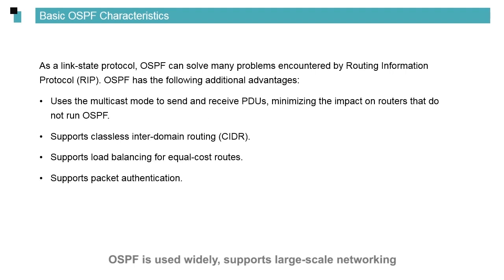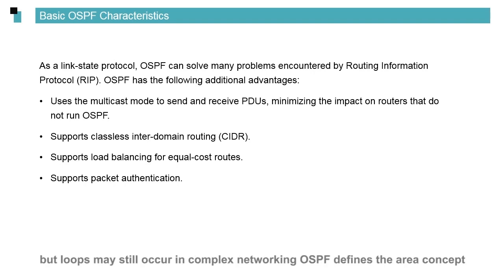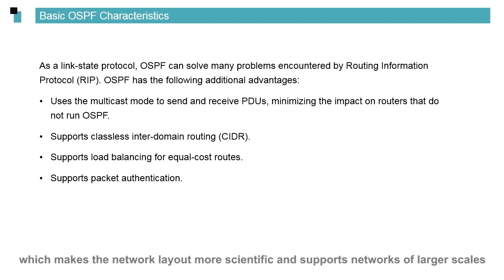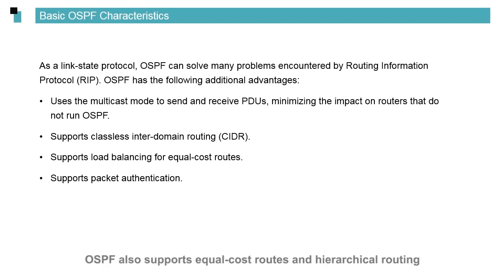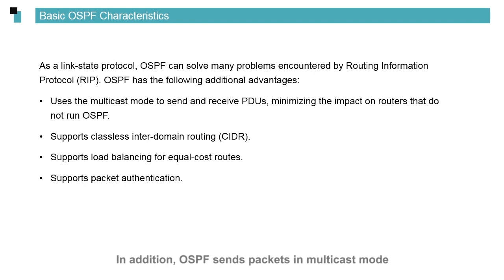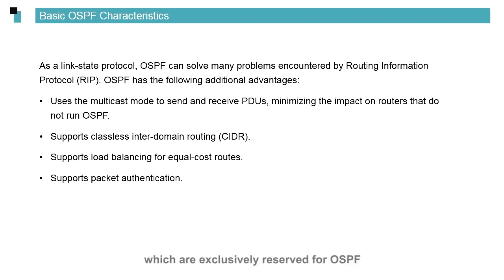OSPF stands for open shortest path first, which means it is public and any vendor can use this protocol — a major reason for its wide application. OSPF is used widely, supports large-scale networking, and converges rapidly. OSPF uses the SPF algorithm to prevent loops, though loops may still occur in complex networking. OSPF defines the area concept, which makes the network layout more scientific and supports networks of larger scales. OSPF also supports equal cost routes and hierarchical routing, and supports verification to enhance security. In addition, OSPF sends packets in multicast mode, with two multicast addresses: 224.0.0.5 and 224.0.0.6, exclusively reserved for OSPF.